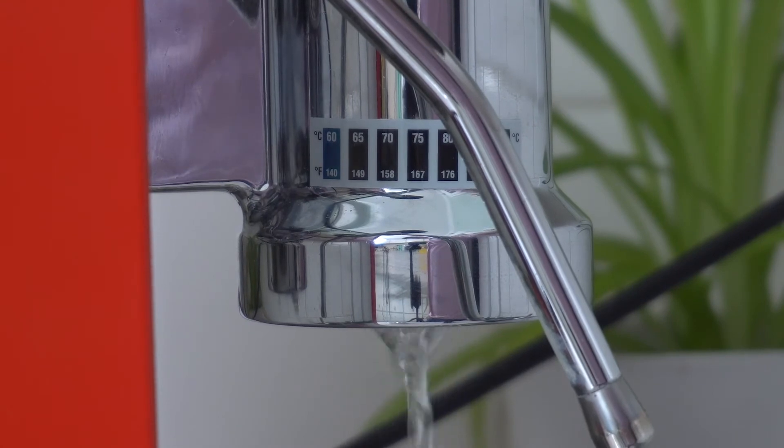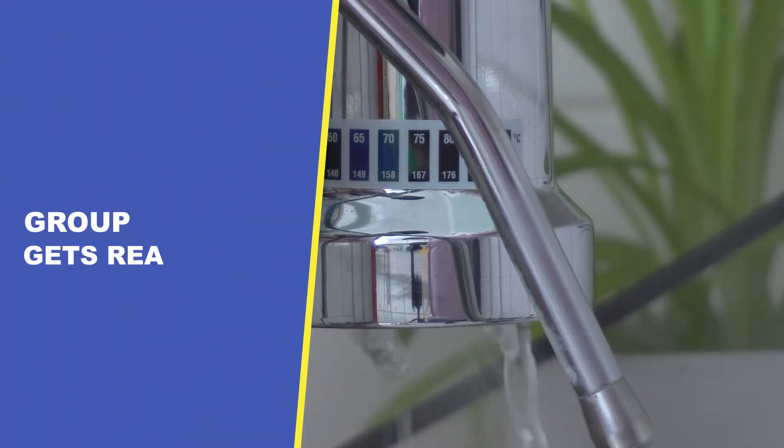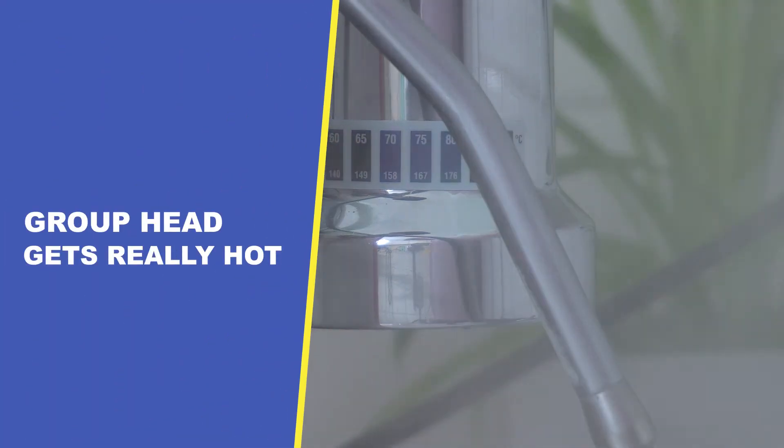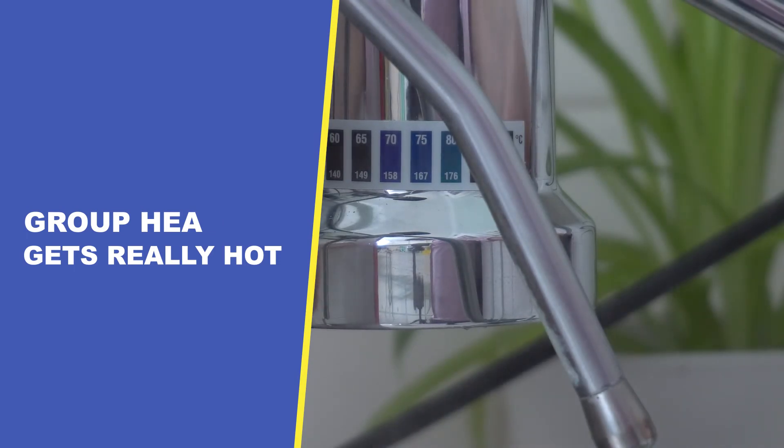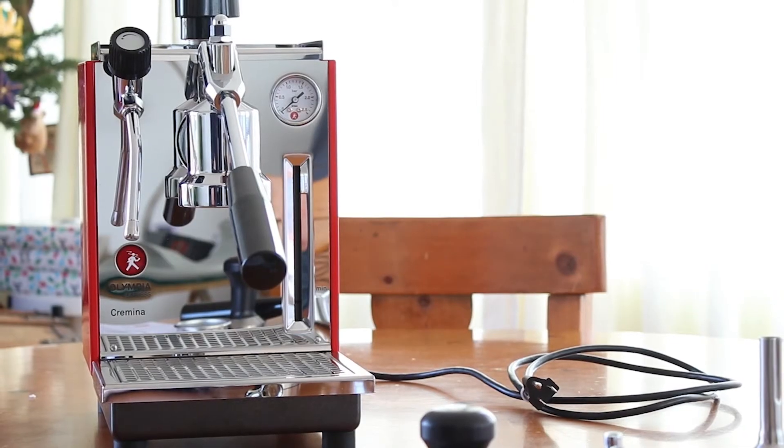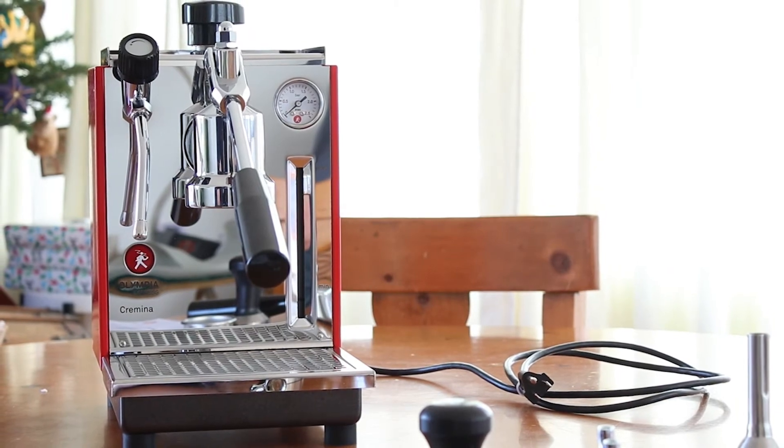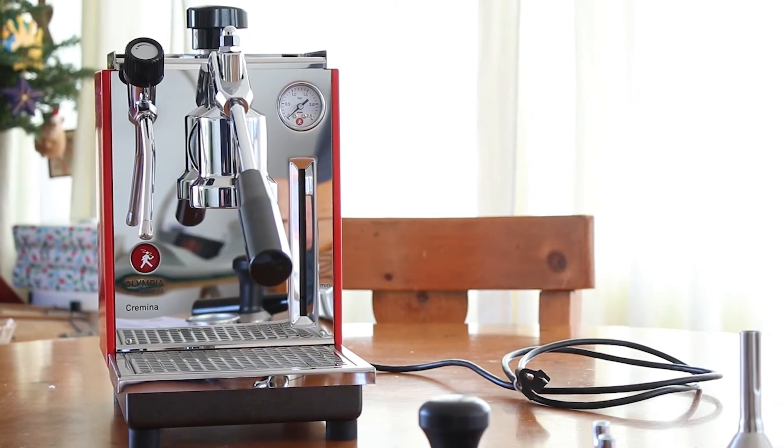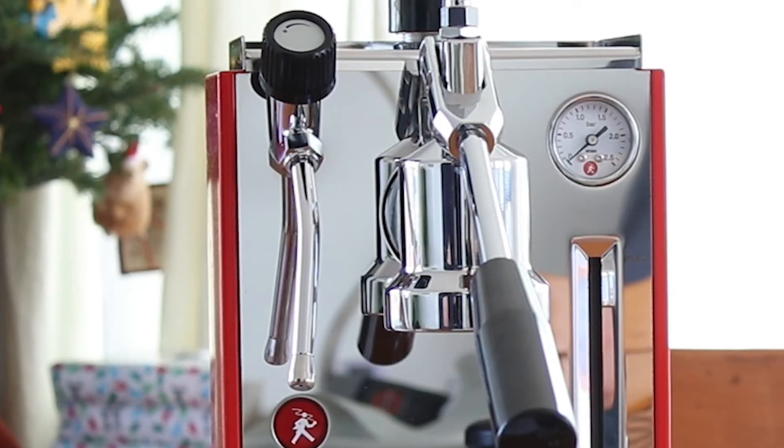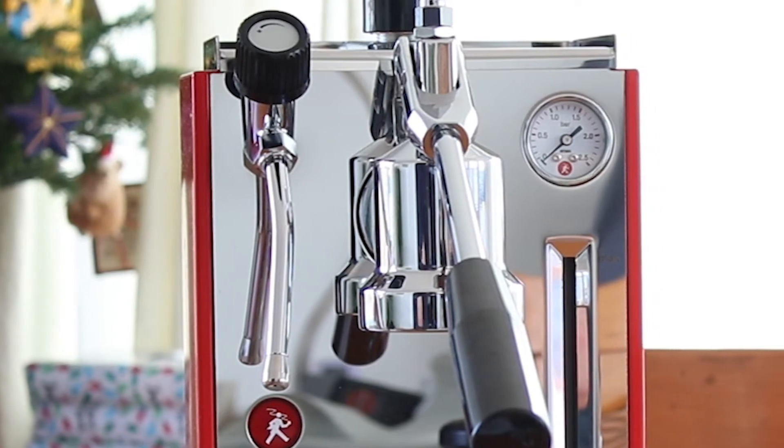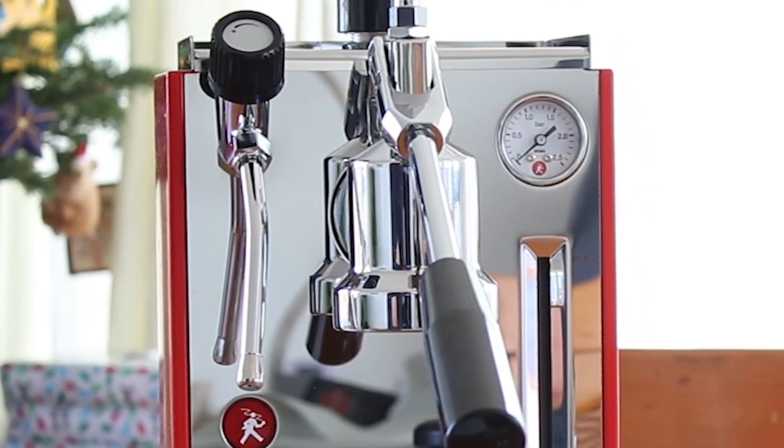Another thing that should have been obvious to me is that the group head gets really hot. I know this is obvious, but one of the reasons I wanted to get a Cremina over a La Pavoni is because the boiler is covered. But I still have to be careful not to hit my hand on the group head. There were a couple times when I tried steaming milk and accidentally brushed my finger against the group head. And whoops!